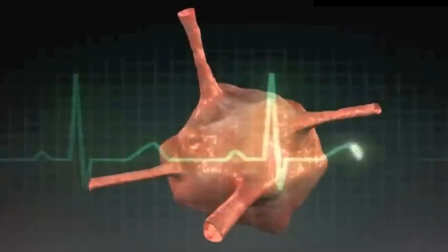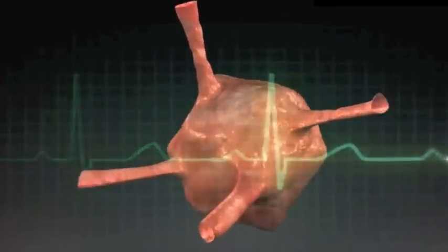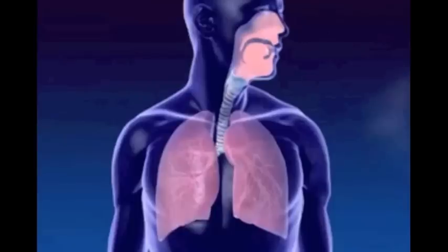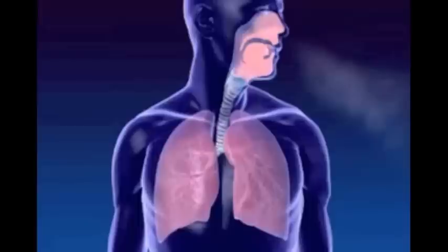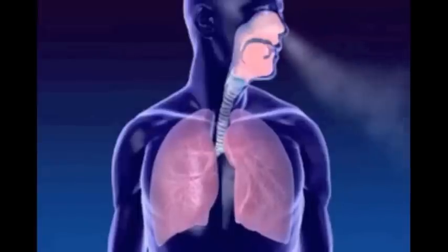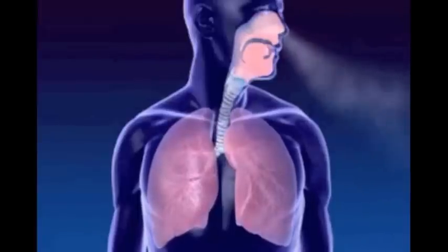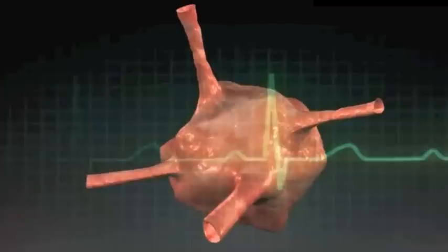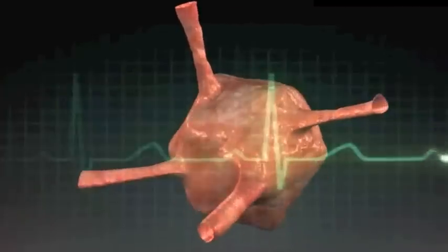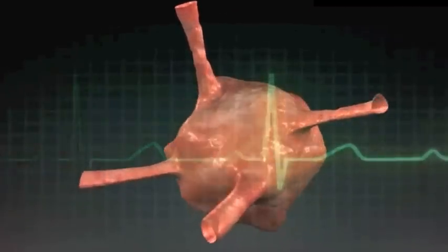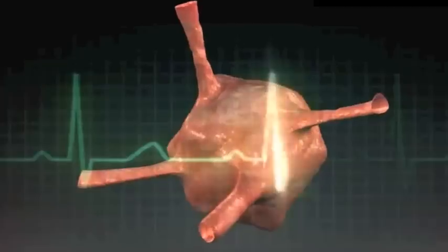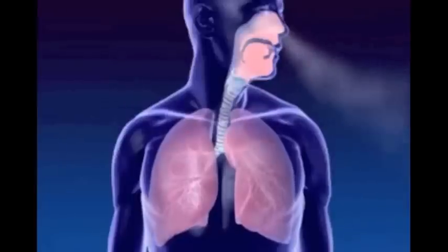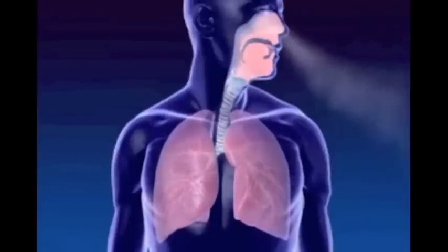The low frequency band, 0.05 to 0.15 Hz, is related to acceleration of the heart rate during inhalation and is thought to reflect combined activity of sympathetic and parasympathetic nervous systems. The high frequency component, 0.15 to 0.5 Hz, is related to deceleration of the heart rate during exhalation and is thought to reflect activity in the parasympathetic nervous system only.